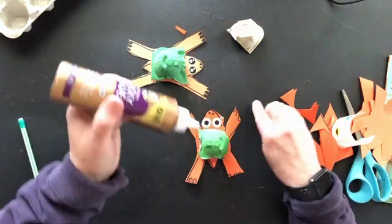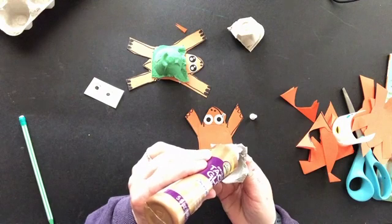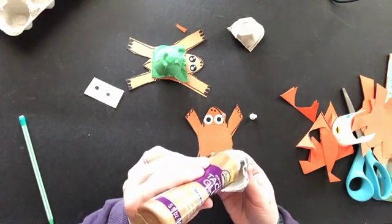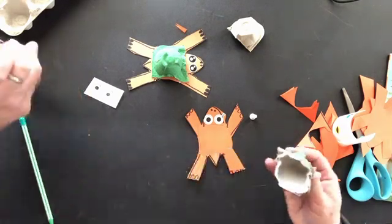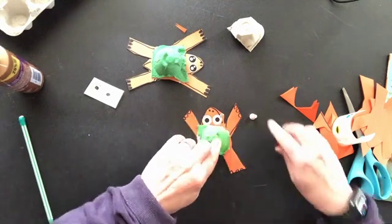I'm going to be using tacky glue just because it dries super fast, but you could use hot melt glue if mom or dad are ready to help you, or you could use regular Elmer's glue. And you're going to want to put that down how you decided you were going to put it down.